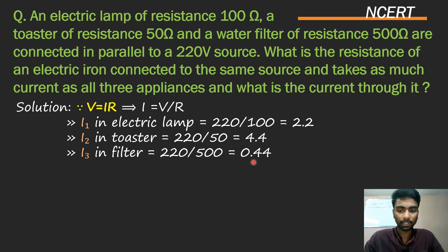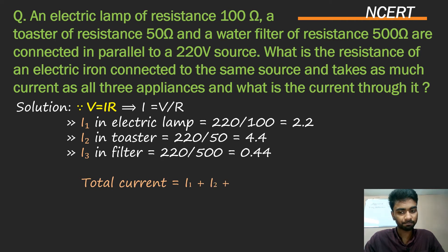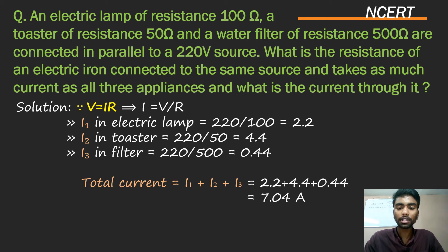Current i3 = 0.44 ampere. Question mein diya hai ki electric iron in teeno jitna current leta hai, toh hum teeno ka sum karenge. Total current = i1 + i2 + i3 = 2.2 + 4.4 + 0.44 = 7.04 ampere. Yahi current electric iron le rahi hai.